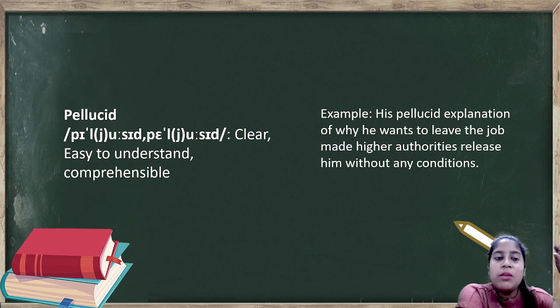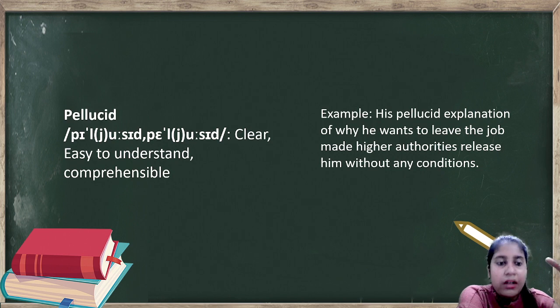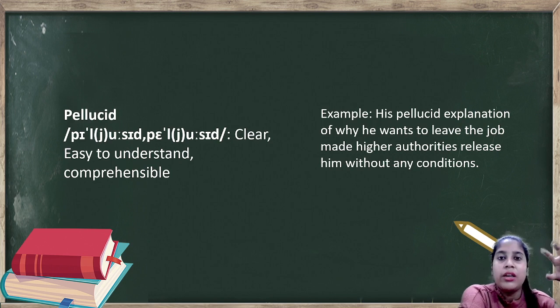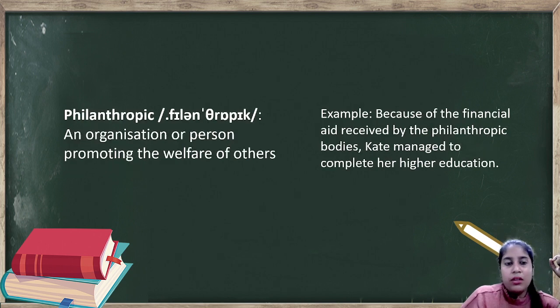Pellucid. Now, pellucid - see, lucid, or L-U-C already means light. Roshan karna, shine karna, light me lana. This is a root word L-U-C, lucid, that is a root word which means light. Pellucid means easy to understand or comprehensible. Something that is very understandable, very elaborately explained, is called pellucid. Example: His pellucid explanation of why he wants to leave the job made higher authorities release him without any conditions. An elaborated, explained way of anything. If you give an explanation for some reason, you call it pellucid - an elaborate form.